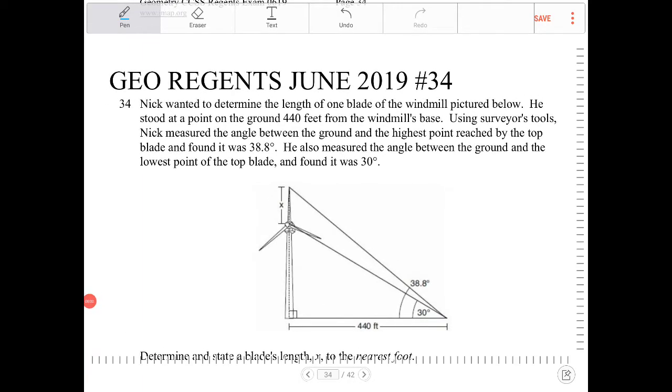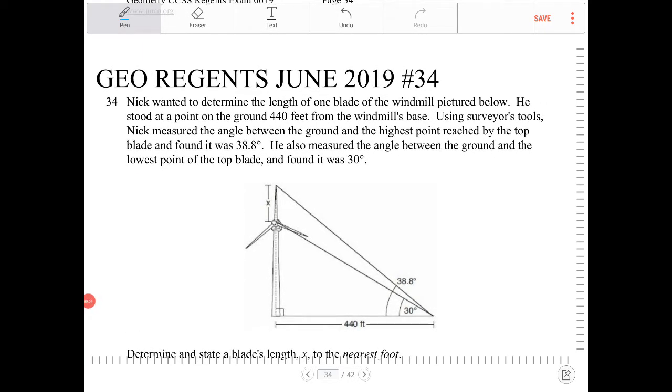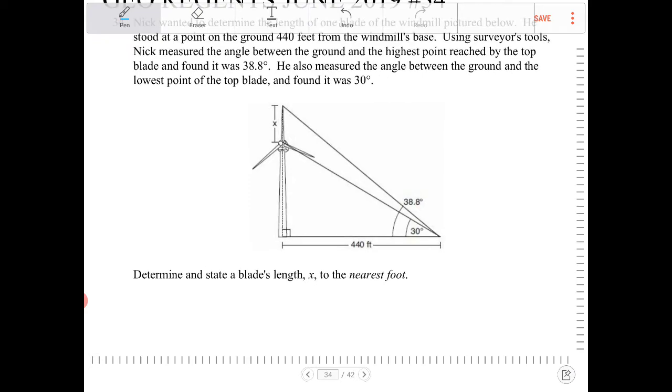Nick wanted to determine the length of one blade of the windmill pictured below. He stood at a point on the ground 440 feet from the windmill's base. Using a surveyor's tool, Nick measured the angle between the ground and the highest point reached by the top blade and found it to be 38.8 degrees. He also measured the angle between the ground and the lowest point of the top blade and found it was 30 degrees.